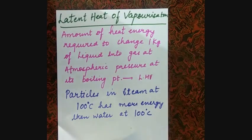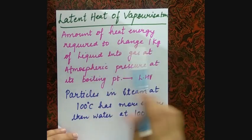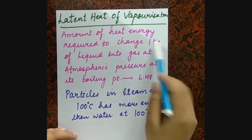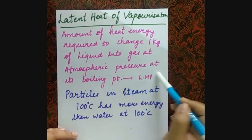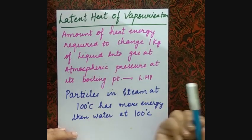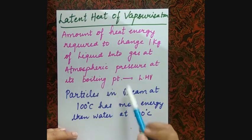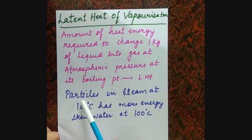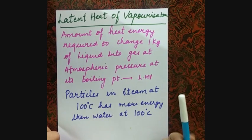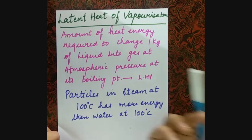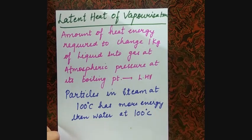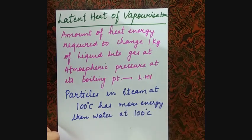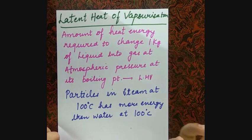Now for latent heat of vaporization: similarly, we convert liquid to gas at atmospheric pressure — at the boiling point. The steam particles at 100°C have more energy than water particles at 100°C. Gases have the most energy in their particles. So steam at 100°C has more energy than liquid water at 100°C.